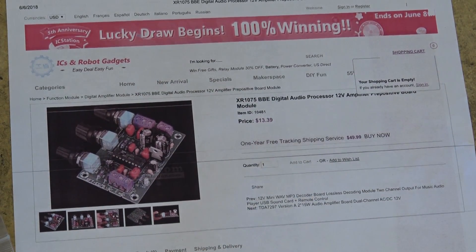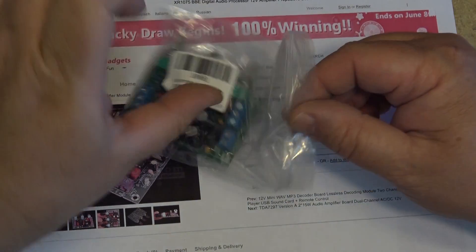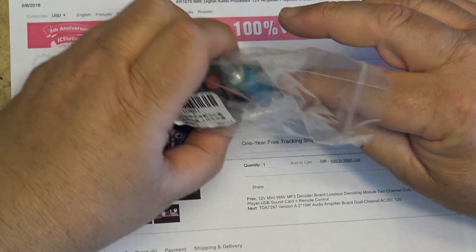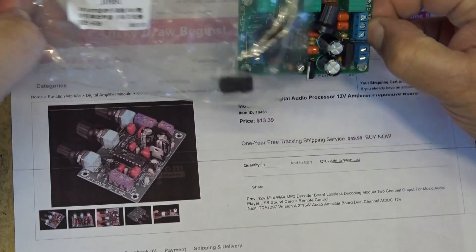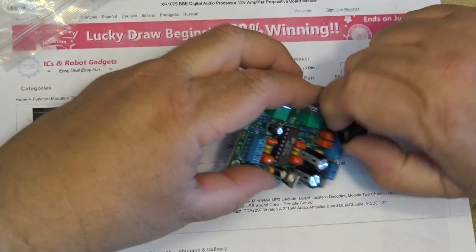In this episode I'm going to look at the XR1075 BBE Digital Audio Processor Amplifier module from IC Station. Here's the unit itself. Let's take a look at the board. It comes with the little knobs as well.